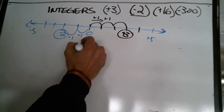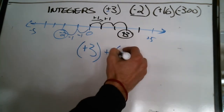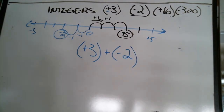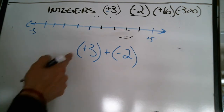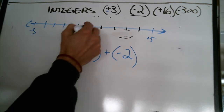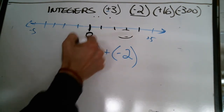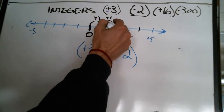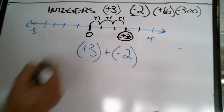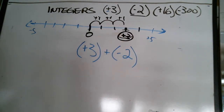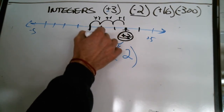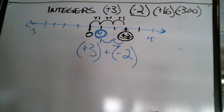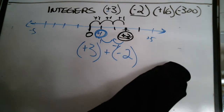Let's try something — let's do positive three and then add negative two. Where do you think we're going to end up? The first thing: positive three — there's my zero, I'm going to start at zero always. I go positive three: positive one, positive one, positive one. Now I've gotten to positive three. Now I'm going to add negative two, so I take two steps back: negative one, negative one. I end up right at positive one. That's the basics behind integers.